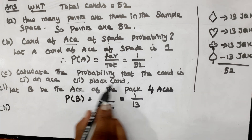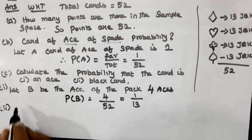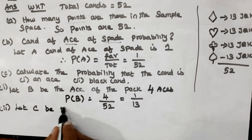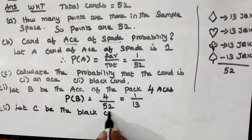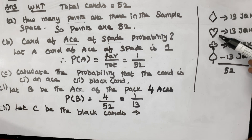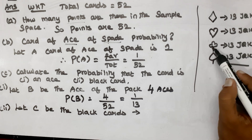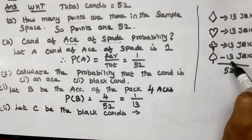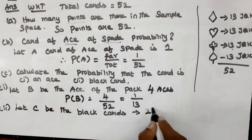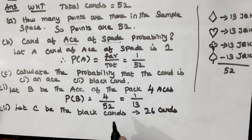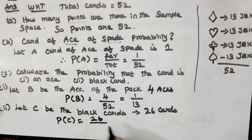Subdivision 2: find the probability of drawing a black card. Let C be the event of drawing a black card. Diamond is red, hearts are red, clubs are black, and spades are black. Clubs have 13 cards and spades have 13 cards, so 13 plus 13 equals 26 black cards. Favorable outcome = 26, total outcome = 52. So 26 by 52 equals 1 by 2. This is the answer for question number 4.